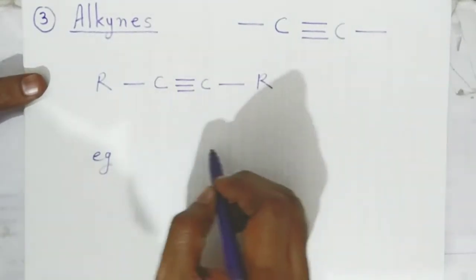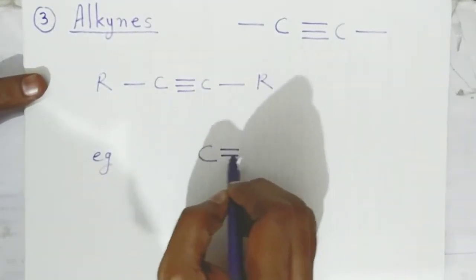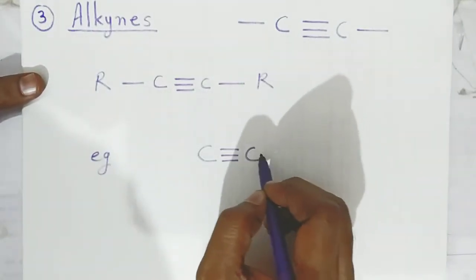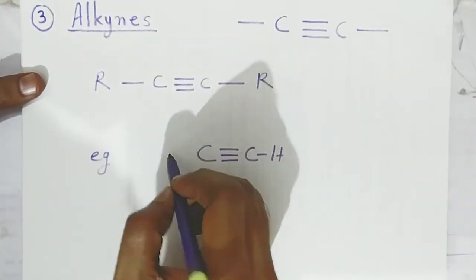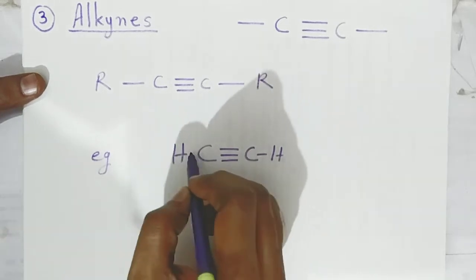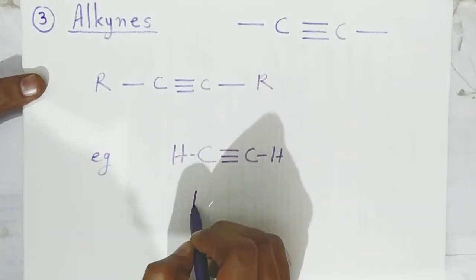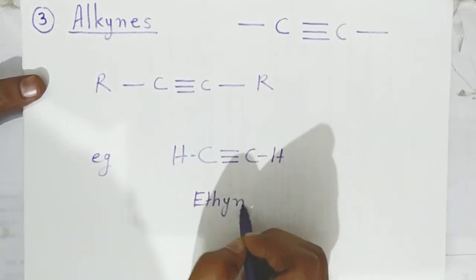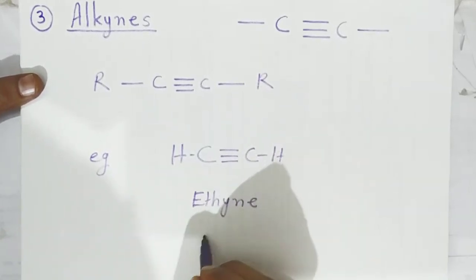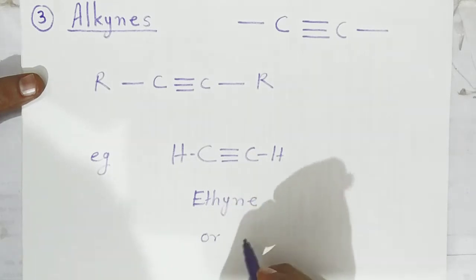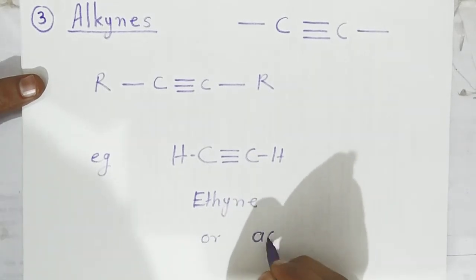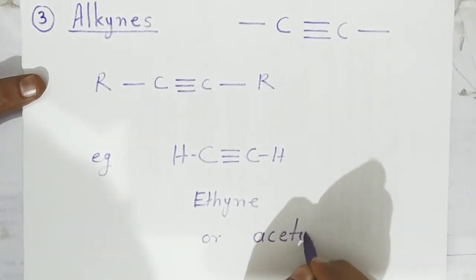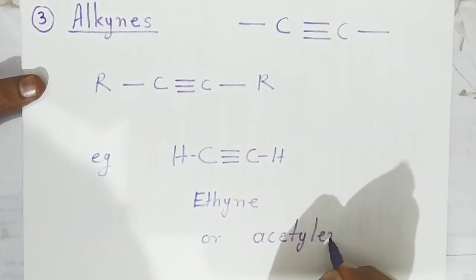A very simple example is ethyne. This is ethyne, and its other name is acetylene. This is also called as acetylene.